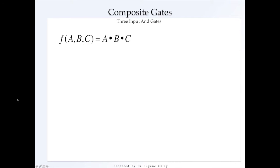So for example, if we want to have three input logic gates, let's take the AND logic gate for example. So we not only have A and B, we have A AND B and C.